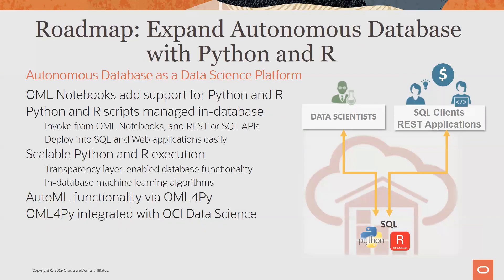Expanding Autonomous Database with Python and R: Autonomous Database grows as a data science platform, and OML Notebooks will be extended with Python and R support. In the same notebook, you'll include paragraphs of each language — SQL for initial data munging, R for visualization, Python for model building, or vice versa. Python and R scripts will be managed in the database with access to the scalable transparency layer and in-database ML algorithms. AutoML will also be made available with OML for Py, and OML for Py will be integrated with OCI Data Science, allowing connection from the Python JupyterLab environment into Autonomous Database.